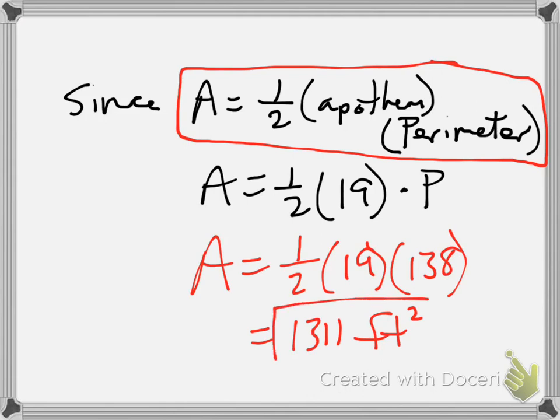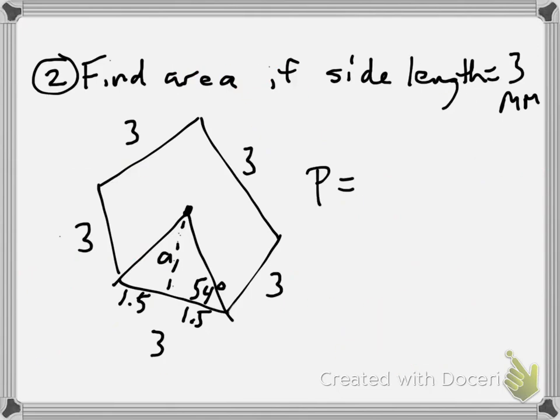That's what you do when you have the apothem. Now what happens when you have a side length? If you know the side length, you can find the perimeter right away. Each side is 3, so 5 times 3 is 15. My area is one half times a times 15, so we have to find a this time.